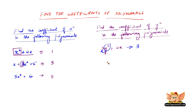Let us take another one: 4x plus y. Now here, there is no coefficient written before y. But if there is no coefficient written before any variable, then the coefficient of that variable is 1. Therefore, the coefficient of y here is 1.